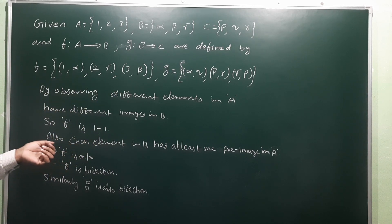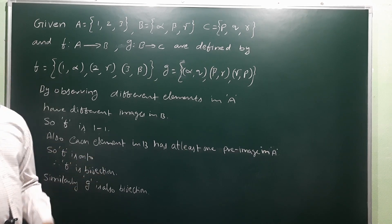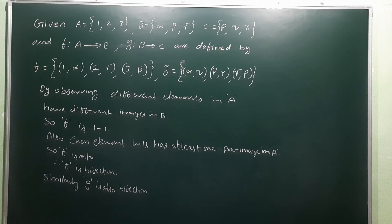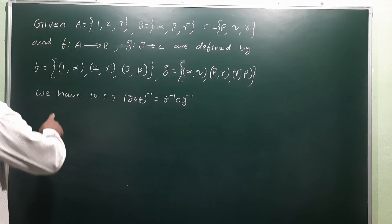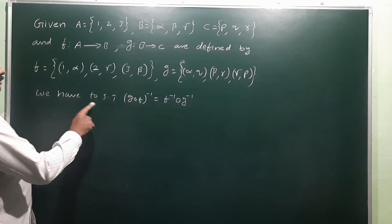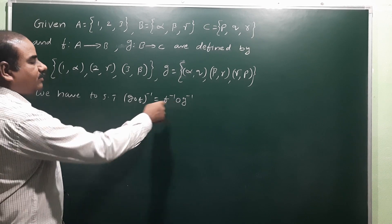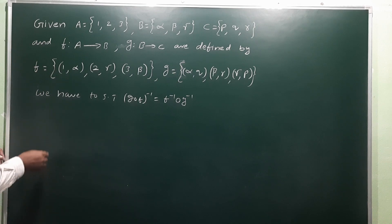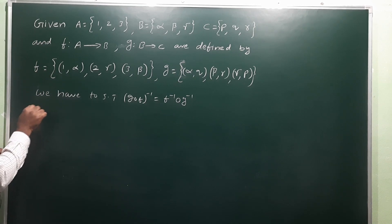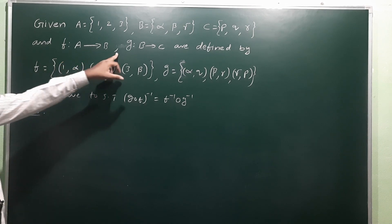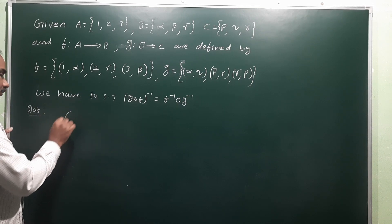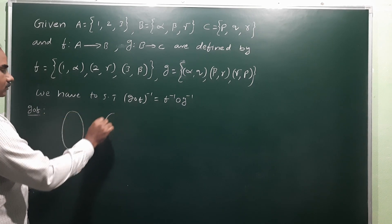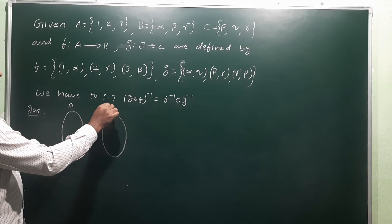Next, we have to prove that (g∘f)⁻¹ = f⁻¹ ∘ g⁻¹. Let us look at the LHS: g∘f. Since f is from A to B and g is from B to C, g∘f is a function from A to C. Let us see this via Venn diagrams. f is a function from A to B, and g is a function from B to C.